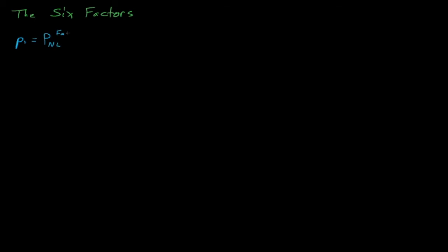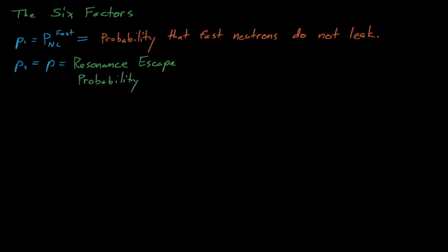P1, which is a probability that fast neutrons don't leak, is represented by P-not-leakage-fast. P2, which is the fraction of fast neutrons that successfully slow down to thermal energies, is known as the resonance escape probability, and it's represented by the symbol P.